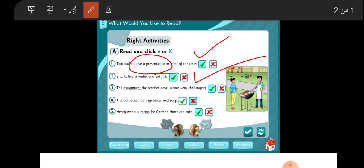The assignment the teacher gave us was very challenging. Excellent, correct! Number four: the barbecue had vegetables and soup. Barbecue with vegetables and soup? No, this is incorrect.